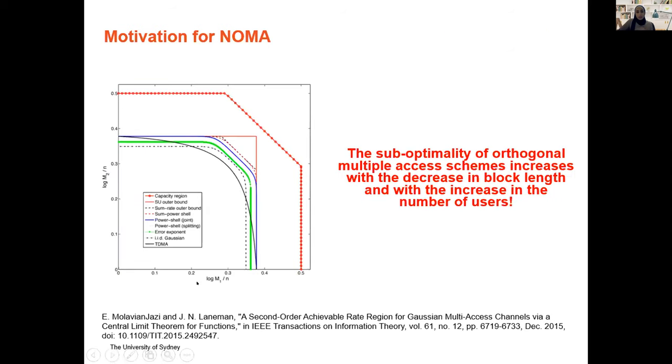So recent advances in information theory, this is a particular paper that I like by Malevian, Jazzy and Lehman back in 2015. They show that this is the classical kind of multiple access channel capacity for infinite block length asymptotic, and this is what they have come up with for finite block length. And this is where they found TDMA to reach. So there is a gap, it is not capacity optimal. They actually show in their proofs that these capacity regions are only achievable if you do NOMA.